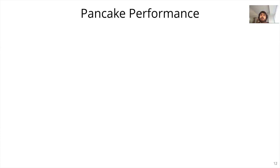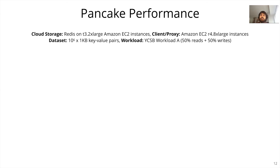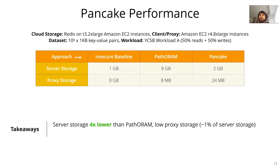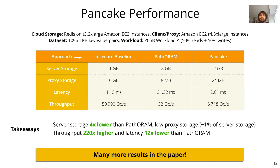Before concluding, I want to briefly talk about how Pancake performs for real-world workloads. We show results using Redis as the cloud storage backend, deployed on Amazon EC2 instances. The dataset comprised 1 million key-value pairs of size 1 KB each, using the Yahoo Cloud Serving Benchmark workload with 50% reads and 50% writes. Our results show that Pancake requires four times lower cloud storage than Path ORAM, the state-of-the-art ORAM approach, with a proxy storage overhead of about 1% of cloud storage. Pancake throughput is 220 times higher than Path ORAM, with 12 times lower latency.